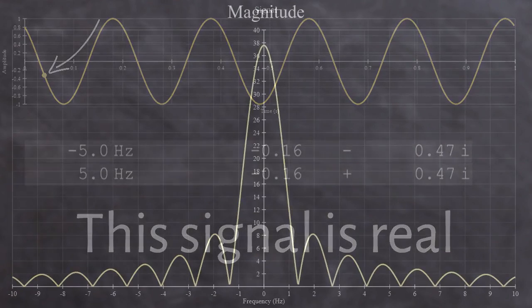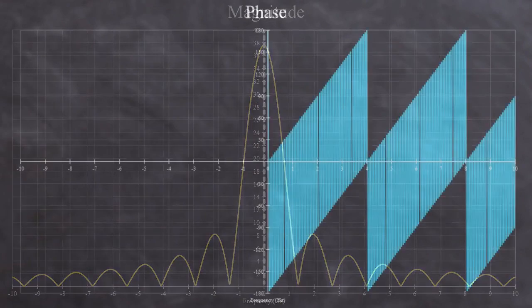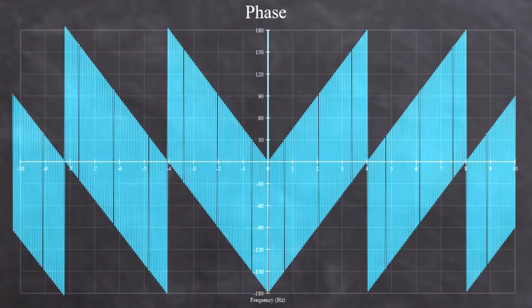Which is why the magnitude spectrum of the Fourier transform for any real signal is always reflected in the 0 Hz line. And why the phase spectrum of any real signal is always reflected in the 0 Hz line, and reversed.